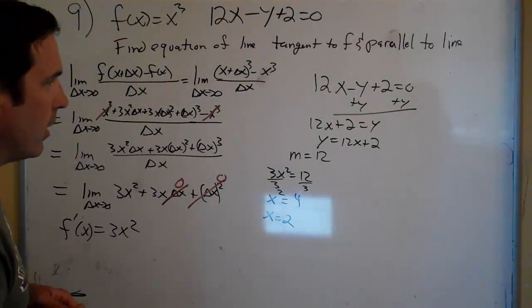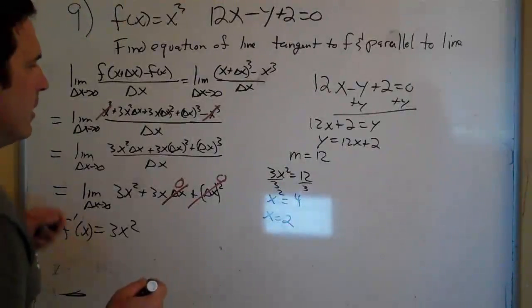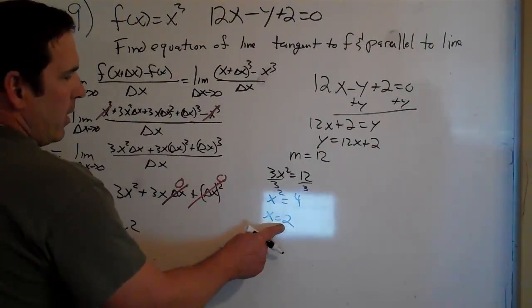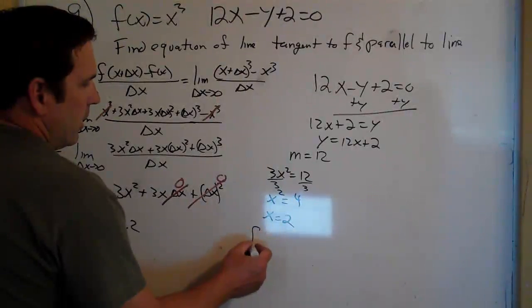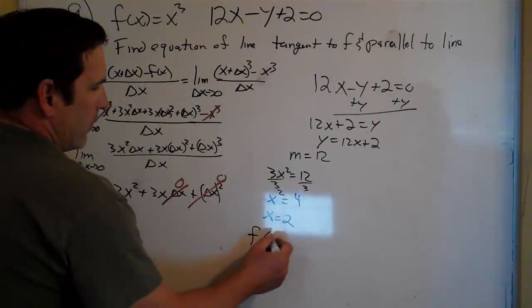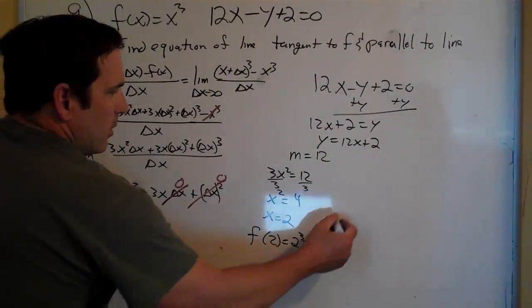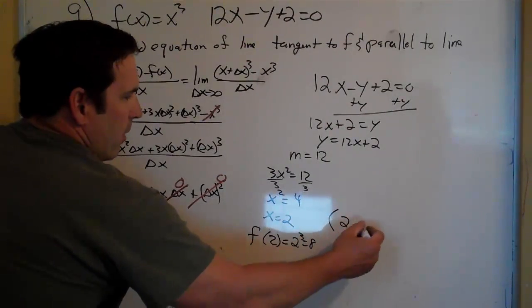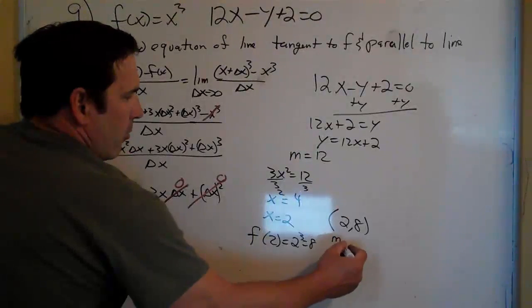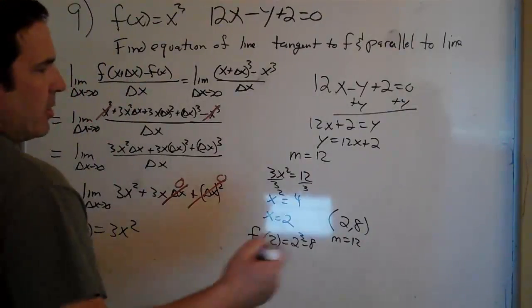So that would give us this, where this is all happening where x is 2. So let's see, f of 2 would be 2 cubed, which is 8, so we're looking at the point 2 comma 8, and our slope is 12. Now we use the point-slope formula.